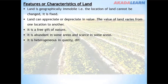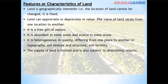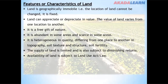Land is heterogeneous in quality, differing from one place to another in topography, soil texture and structure, and soil fertility. The supply of land is limited and is subject to the law of diminishing returns. Additionally, the availability of land is subject to land use acts or laws.